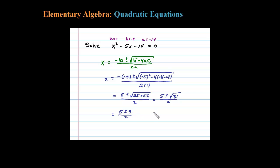So this tells me I have my two solutions. I have 5 minus 9 over 2, or X could equal 5 plus 9 over 2. In the case that I'm subtracting, 5 minus 9 is negative 4, divided by 2 is negative 2.